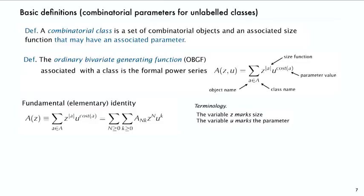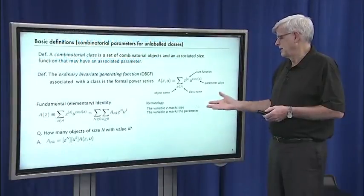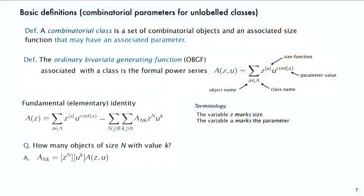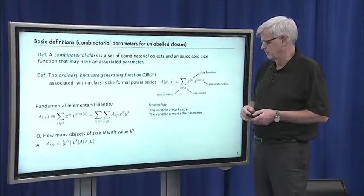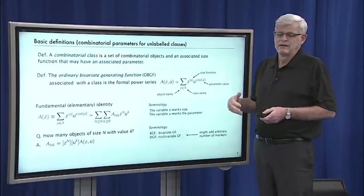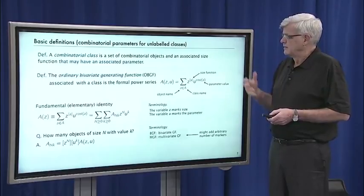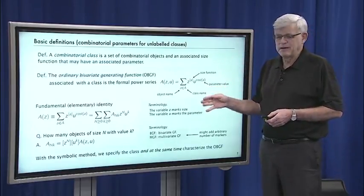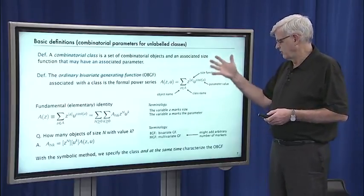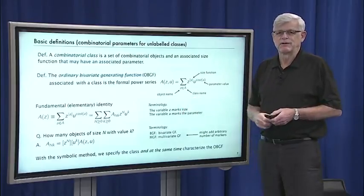We have a fundamental identity: if you sum over all objects in the class Z to the size times U to the cost, you can collect terms that have the same size n and same cost k, writing that coefficient a_{n,k} as the number of objects of size n and cost k. We say the variable Z marks the size and the variable U marks the parameter. You could add more variables — there's a discussion of multivariate generating functions in the text. From the elementary identity, the basic answer to how many objects of size n with value k is the coefficient of Z^n U^k in the ordinary bivariate generating function.